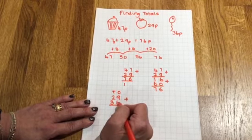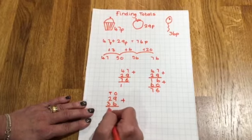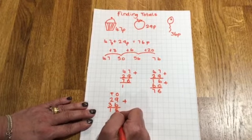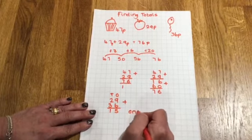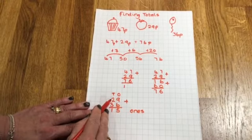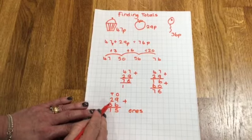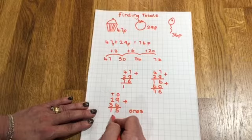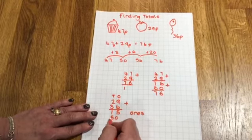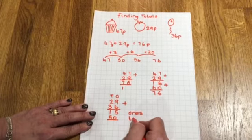9 add 6, that's 15. So I write 15. That's my ones. 2 tens add 3 tens, that's 5 tens. That's 50. That's my tens.